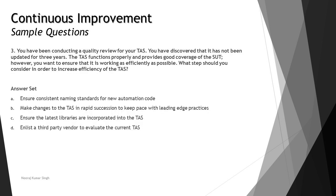The last question of this session: you have been conducting a quality review for your TAS and discovered that it has not been updated for three years. The TAS functions properly and provides good coverage of the SUT; however, you want to ensure it is working as efficiently as possible. What step should you consider to increase efficiency? Option A: ensure consistent naming standards for new automation code. This is a good practice, but new automation code is not being written in this scenario, so A is ruled out.